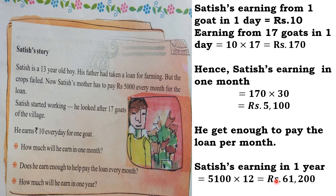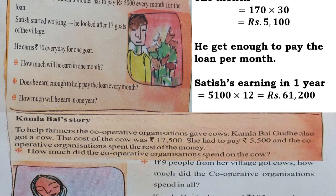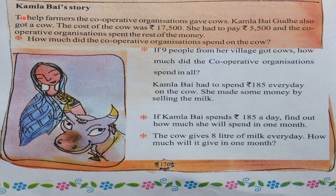Just by looking at the multiplication and calculation, you will come to know this answer also. In Part 3 video, I have shown you how to do the calculations. Now the next story is Kamla Bai's story. To help farmers, the cooperative organizations gave cows.